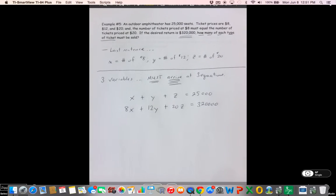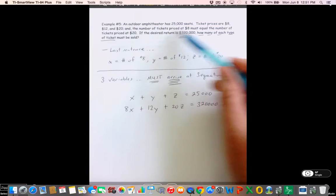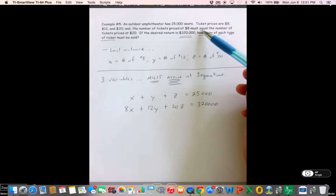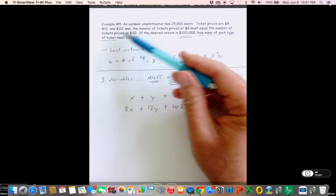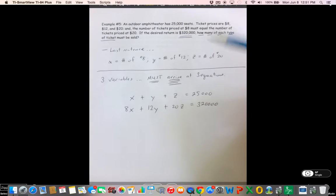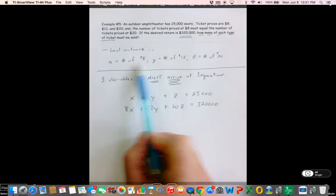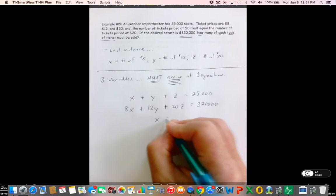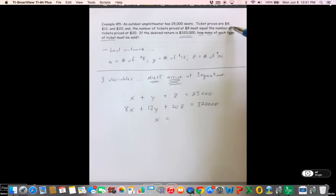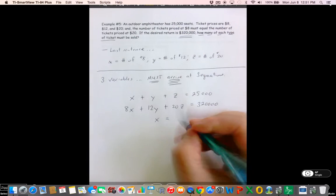Now sometimes a lot of students will say, well I'm done. But you're not done. Guys, you've got three variables X, Y, and Z. So we must end up with three equations. So we've got to look back at our problem and find another relationship. And we see in this sentence right here, the number of tickets priced at $8 must equal the number of tickets priced at $20. So the number of tickets at $8, we've let that be X. That must equal the number of tickets priced at $20, which we've let be Z.